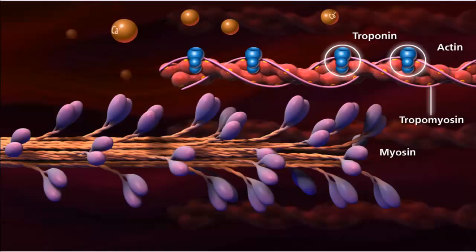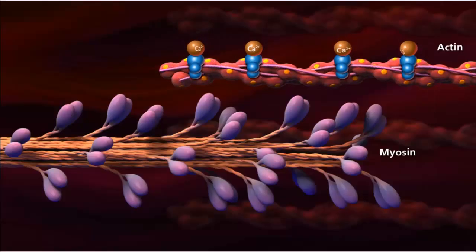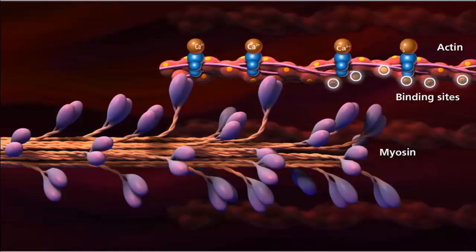When calcium ion levels are high enough and ATP is present, calcium ions bind to the troponin, which displaces tropomyosin, exposing the myosin binding sites on actin. This allows myosin to attach to a binding site on actin, forming a cross-bridge.